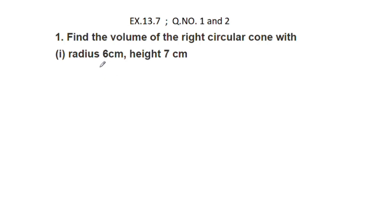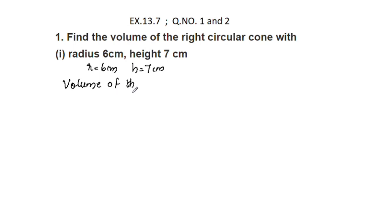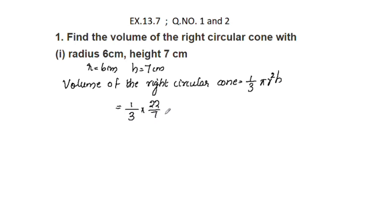Now we substitute the values. The volume of the right circular cone is equal to 1/3 × π × r² × h. We use π = 22/7, r = 6 cm, and h = 7 cm. We get 1/3 × 22/7 × 6 × 6 × 7. The 7s cancel, and 22 × 2 = 44.